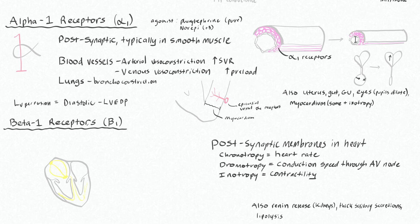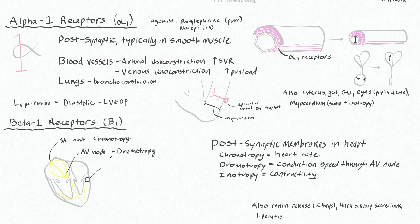Looking at beta-1 receptors, most importantly these are found on postsynaptic membranes in the heart. Beta receptors at your SA node will increase chronotropy, or heart rate. At the AV node, agonists will cause dromotropy, which is increased conduction speed through the AV node. Beta-1 receptors on the myocardium will boost your inotropy. If you need a good beta-1 agonist, think epinephrine, dobutamine, isoproterenol, and ephedrine.